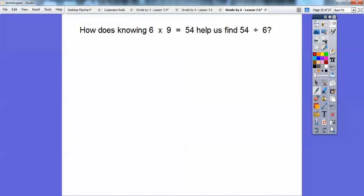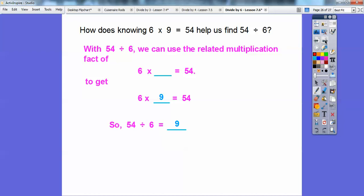How does knowing 6 times 9 equals 54 help us find 54 divided by 6? Remember, division and multiplication are opposite operations. So 54 divided by 6 is the same as 6 times what number equals 54? Since 6 times 9 equals 54, we know 54 divided by 6 equals 9.